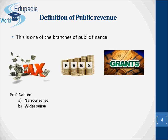Professor Dalton defined public revenue in two senses: the narrow sense and the broader sense. In the narrow sense it includes income from taxes, prices of goods and services supplied by public sector undertakings, and revenue from administrative activities such as fees, fines, etc. Concerning the wider sense, it includes all the incomes of the governments during a given period of time, including public borrowing from individuals and banks and income from public enterprise. This is known as public receipts.